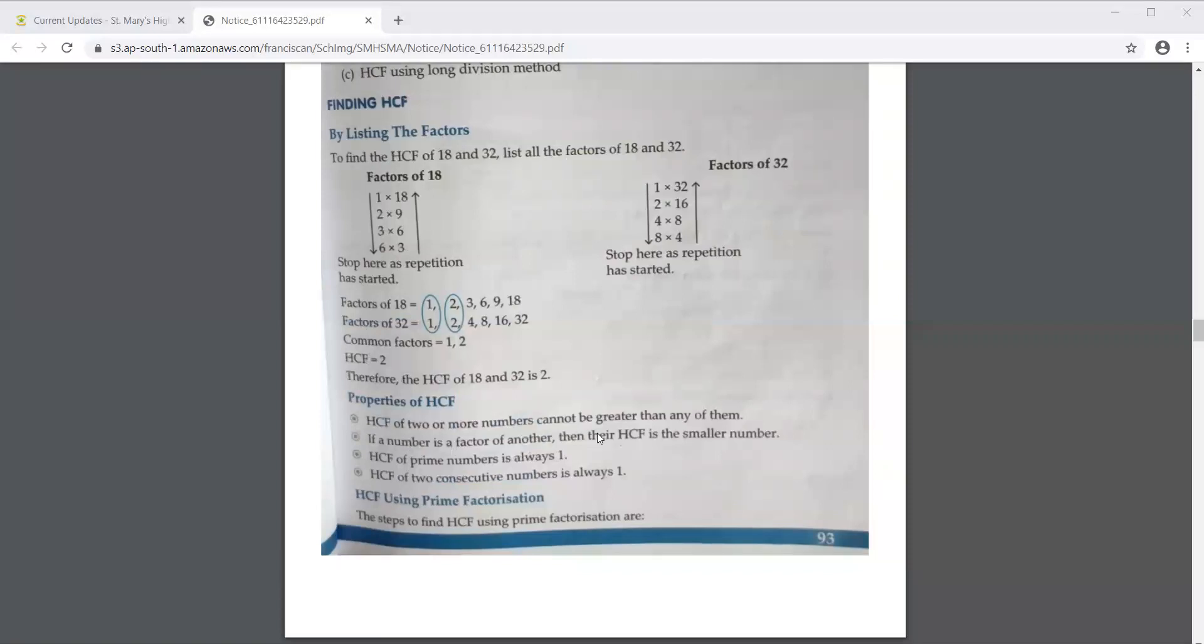So what are they saying in the first one? That whenever you are finding out the HCF, it will never be bigger than any of the numbers. It can be equal to one of the given numbers but never bigger.